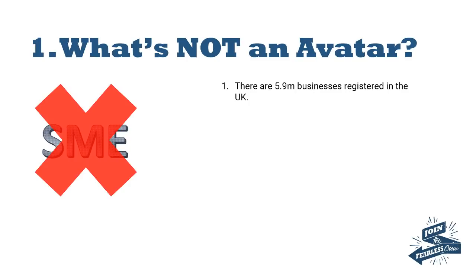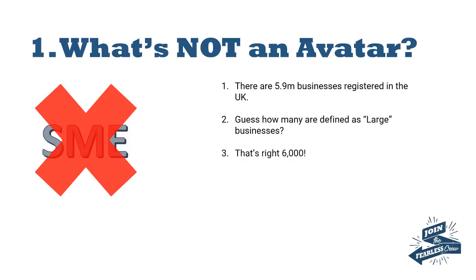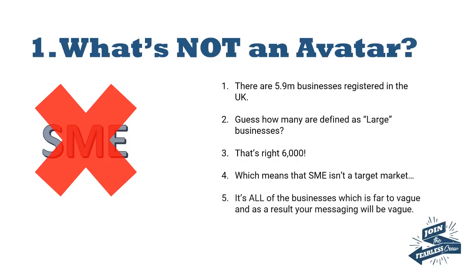There are 5.9 million businesses registered in the UK. I want you to guess how many of those are defined as a large business — probably fewer than you thought. There's only 6,000 to 9,000 large businesses. SME stands for small to medium enterprise, so focusing on large businesses — that's 6 to 9 thousand out of 5.9 million. Essentially, SME isn't a target; it's all of the businesses.